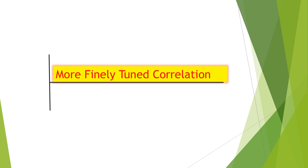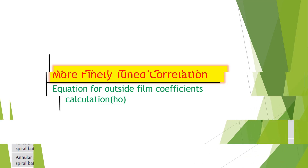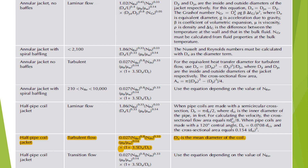Here are some more finely tuned correlations with more details given for each. For calculating the outside film coefficients for the jacket, the first case is the annular jacket with spiral baffle. The jacket is also considered a special case of a helical coil if certain factors are incorporated into the equation for calculating the outside film coefficient.